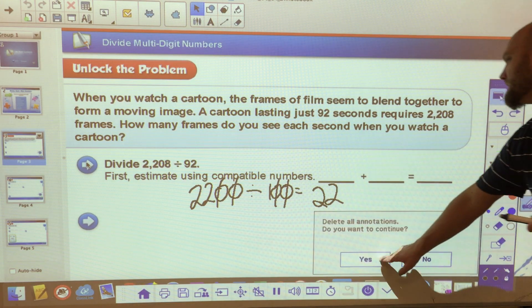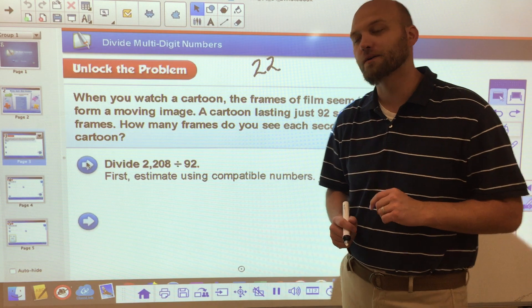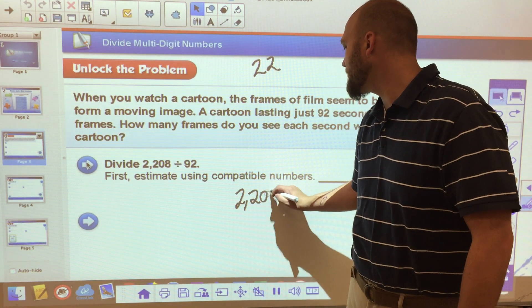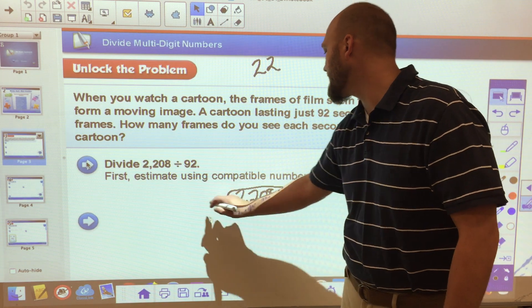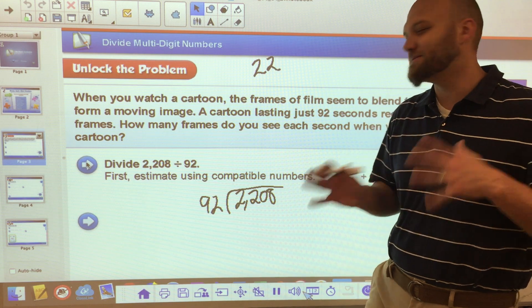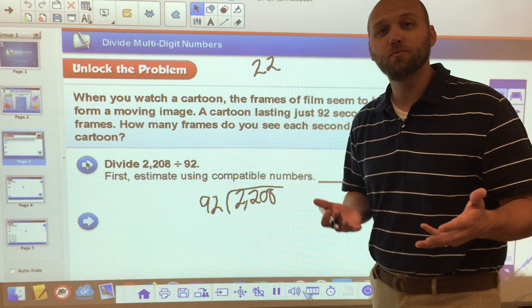Alright, so at this point, let's erase that. We're going to put 22 just as a little mental reminder up there. And then we're actually going to divide. So I'm going to take 2,208 and I'm going to divide by 92. Now, in my head right now, it's not screaming that this is probably going to come out evenly, but I could be wrong.